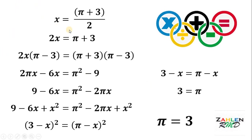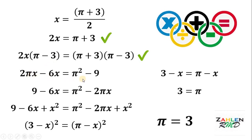Let's take the first line. We have x equals pi plus 3 all over 2. On the second line, we multiply both sides by 2, and that's legal — so this is correct. The next step, we multiply both sides by pi minus 3, and again this is correct. Next, we use special products on the right hand side and distribute on the left side. So we have 2 pi x minus 6x equals pi squared minus 9 — this is correct. We also add 9 to both sides and subtract 2 pi x on both sides, and that's legal — this is also correct.